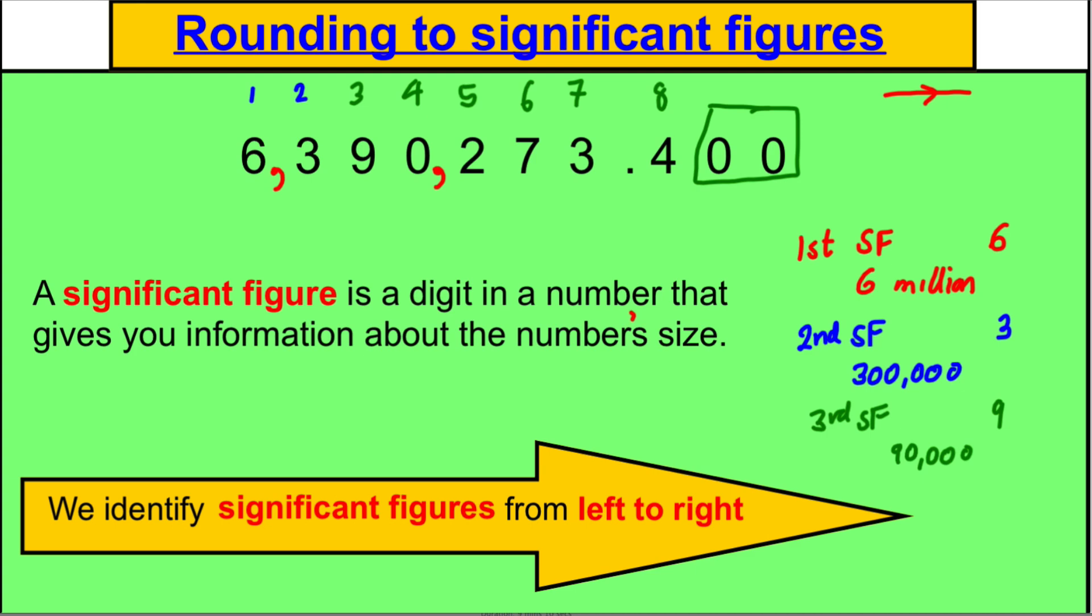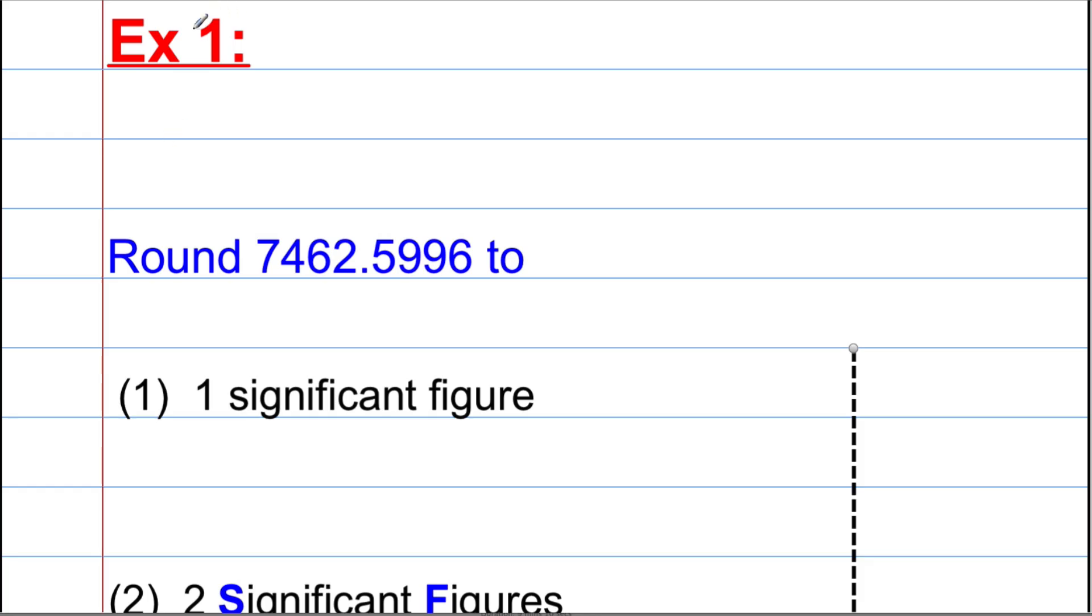Once we know that, all we have to do in questions is identify the significant figure they ask us to round to and do our normal rounding. I'll show you what I mean. Let's do a question. Example 1. We were asked to round 7,462.5996 to the following. Now, first things first, always write the number down. 7,462.5996. And always write the comma in there.